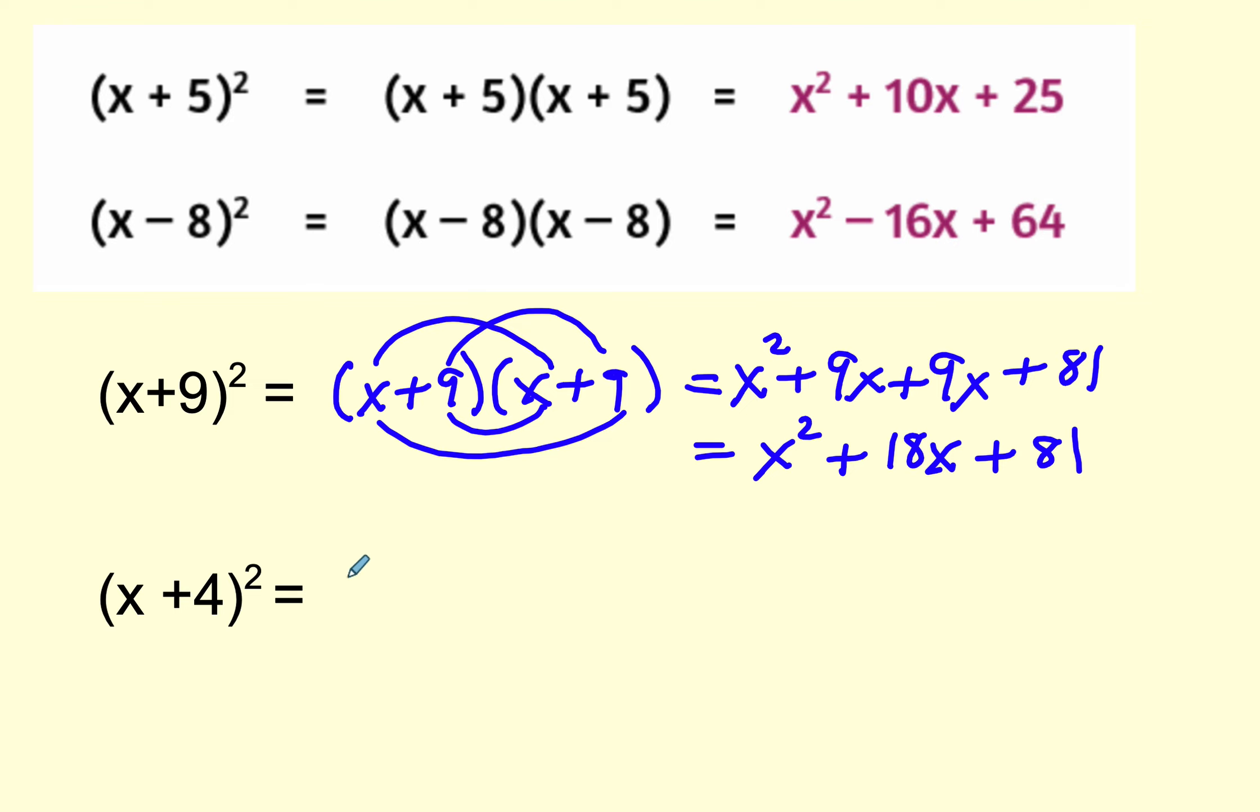So we can add them together, and that'll be x squared plus 18x plus 81. Let's do it again. We're going to write it out twice. I'm going to multiply my first, which is x squared. My outer, which is plus 4x. My inner, which is plus 4x. And my last, which is plus 16. So this will be x squared plus 8x plus 16.